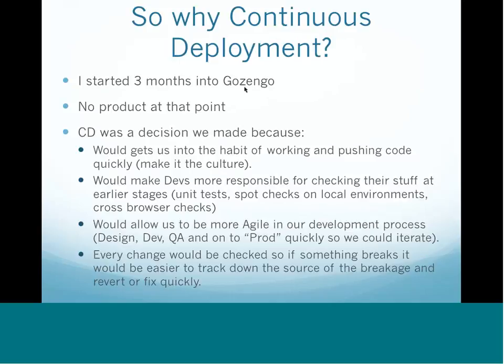So why did we want to do continuous deployment? I started about three months into Gozengo's life, and when I started we didn't even really have a product. The idea was that we wanted to work in a way that allowed us to be fast, and when we started to actually build the product, be able to make changes very quickly. We wanted to ingrain that culture here so that as we got to the point of product and release, it wouldn't be something we'd have to then bring in — we'd already be doing it.